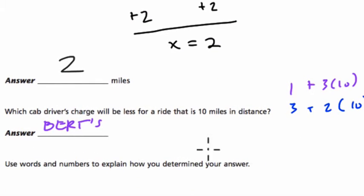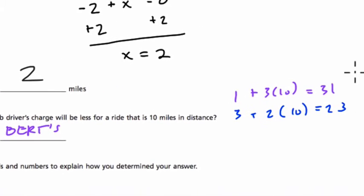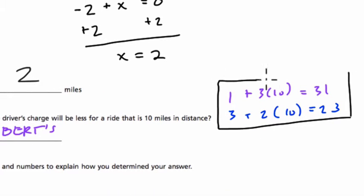Use words and numbers to explain how you determined your answer. So I would just show these 2 calculations. I plugged in X for miles. I know X is miles. And I plugged in 10 for X, which is miles, into both of my equations. And this gave me the total cost for Bert, which is $31. The total cost for Madeline, which is $23.